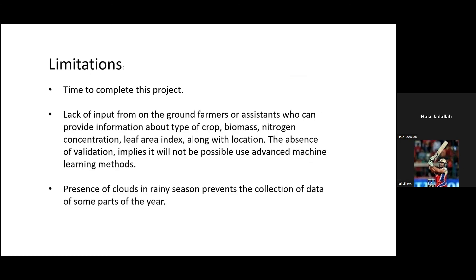The limitations include very little time to complete the project — we had about one month. Ground truth data such as farmer field data is very difficult to collect, so we were unable to process leaf area index or biomass. Additionally, cloud cover from June to October prevented data collection during those months.